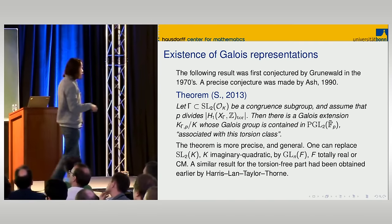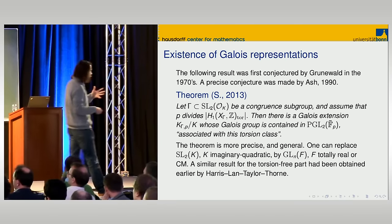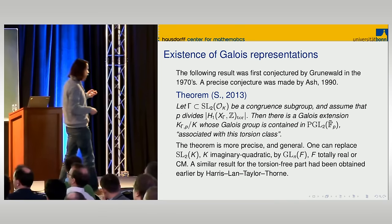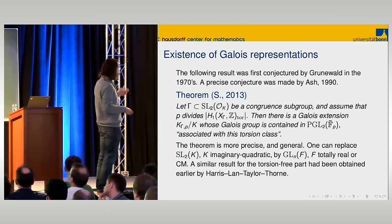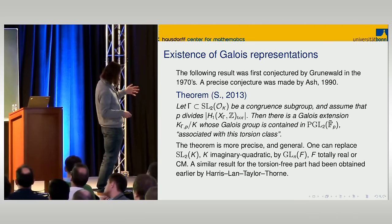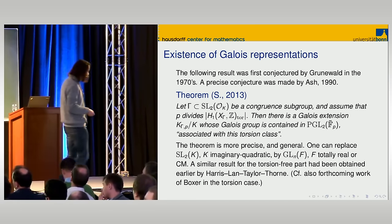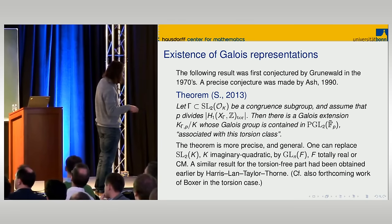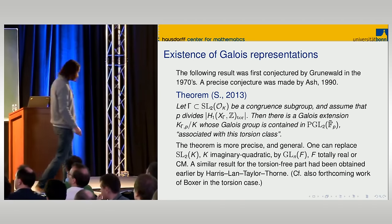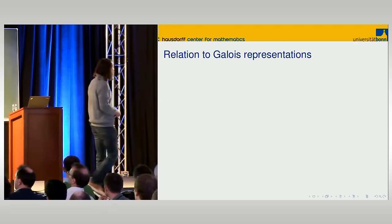As we saw, for Bianchi manifolds there is a lot more torsion than torsion-free part. The Betti number is quite small, so a large part of the homology — all the torsion — is not covered by the earlier result. There is also forthcoming work of Boxer on the torsion case. The key question is: what is the relation between a torsion class in the homology of this Bianchi manifold and this Galois extension?